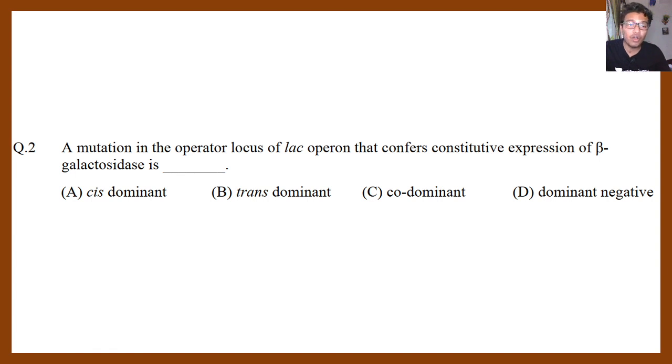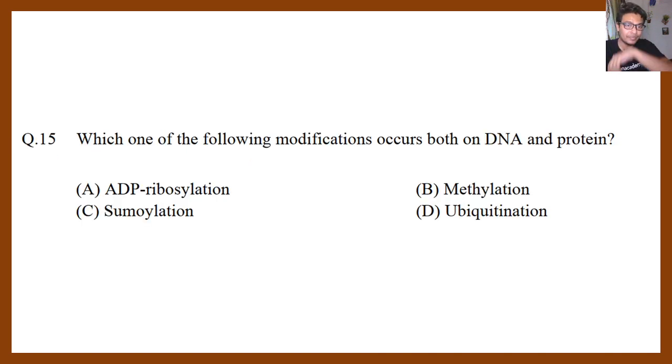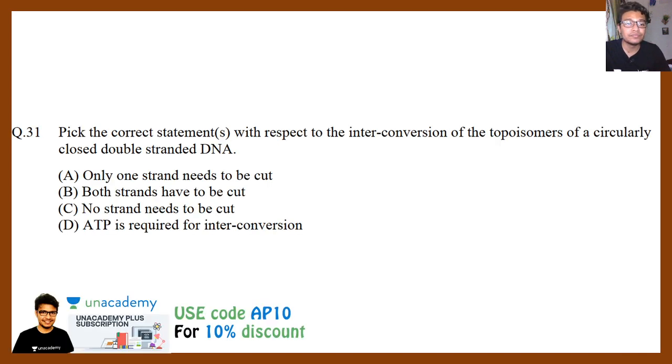Let's talk about 2019. A mutation in the operator locus of lac operon that confers constitutive expression of beta-galactosidase is: cis-dominant, trans-dominant, co-dominant, or dominant negative. You have to understand what it is - it's an operator element. Operator is a part of the DNA, so it's a regulatory element which is part of the DNA, so that is why it's a cis-regulation, cis-dominant. Which one of the following modifications can occur in both DNA and protein? Let me tell you, methylation is one of the modifications which can happen in protein as well as in DNA, so this is the correct option.